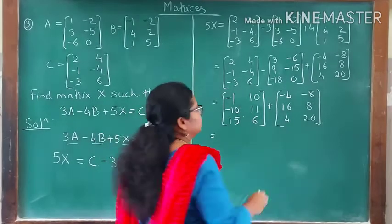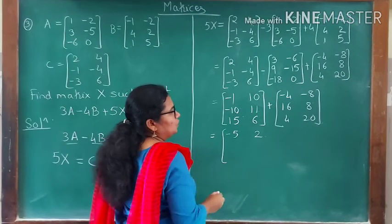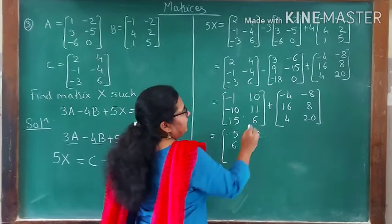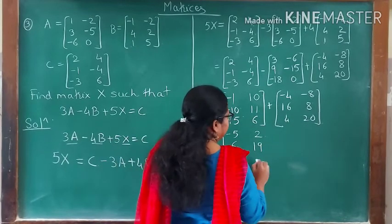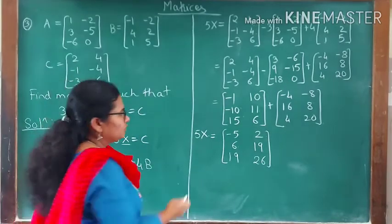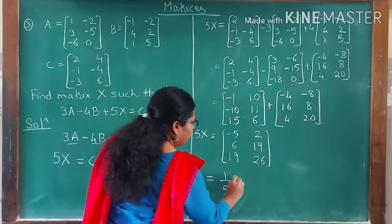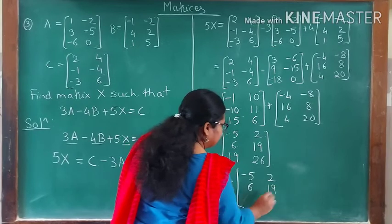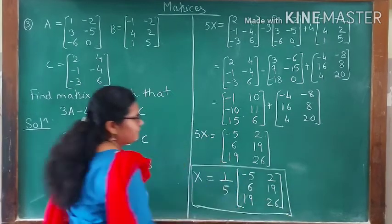Adding the two matrices: -1+(-4)=-5, 10+(-8)=2, -10+16=6, 11+8=19, 15+4=19, 6+20=26. So 5X equals [-5, 2; 6, 19; 19, 26]. Dividing both sides by five, X equals one-fifth times [-5, 2; 6, 19; 19, 26]. This is your matrix X.